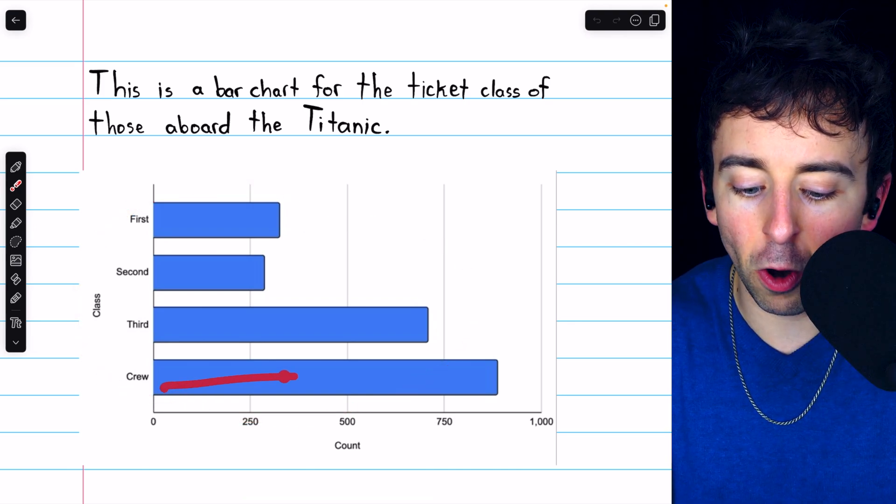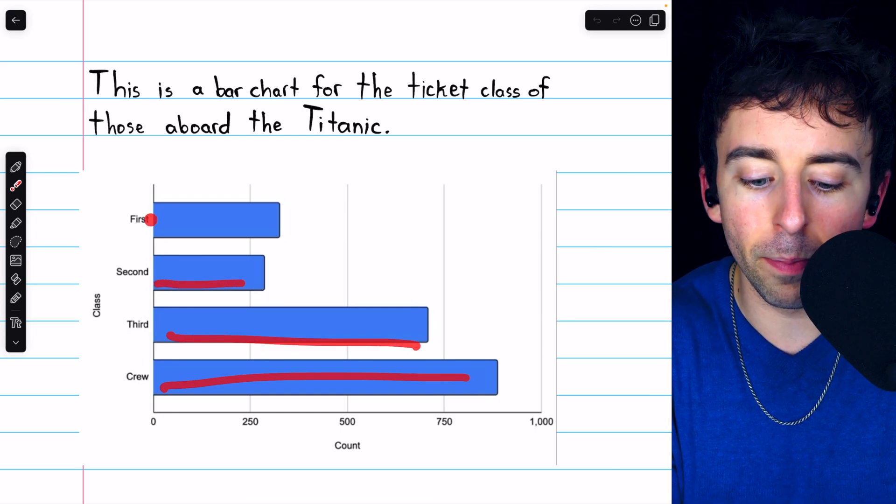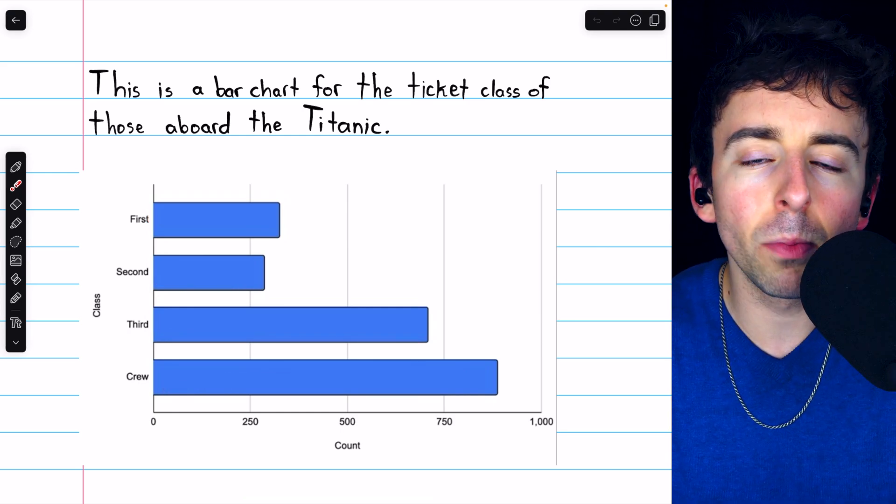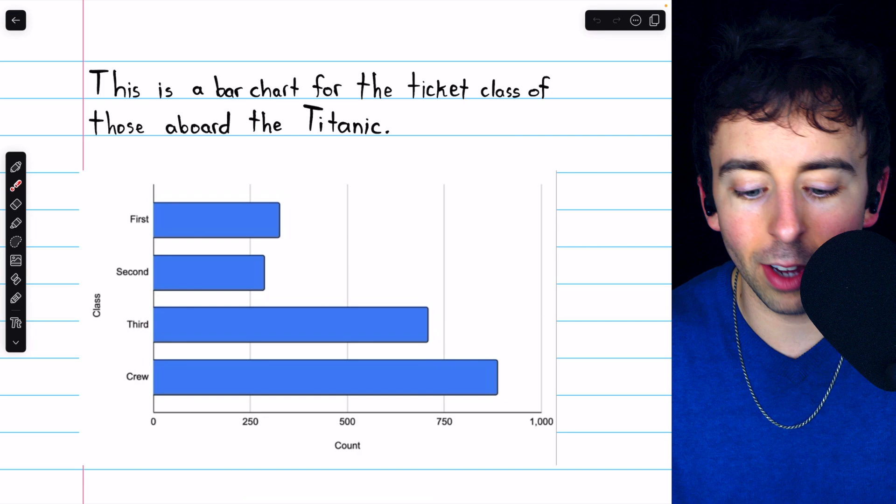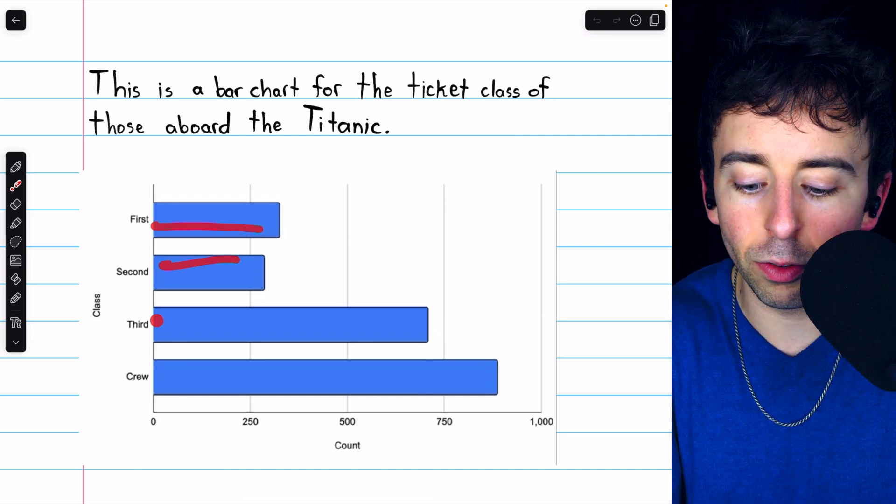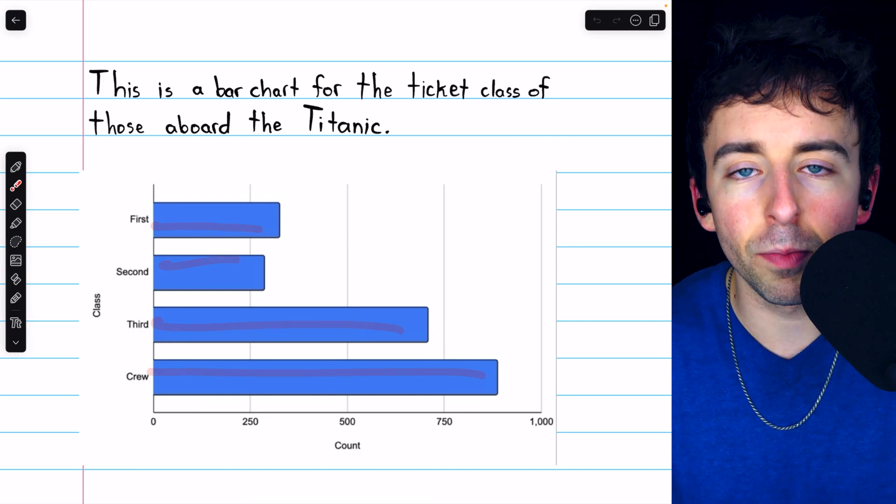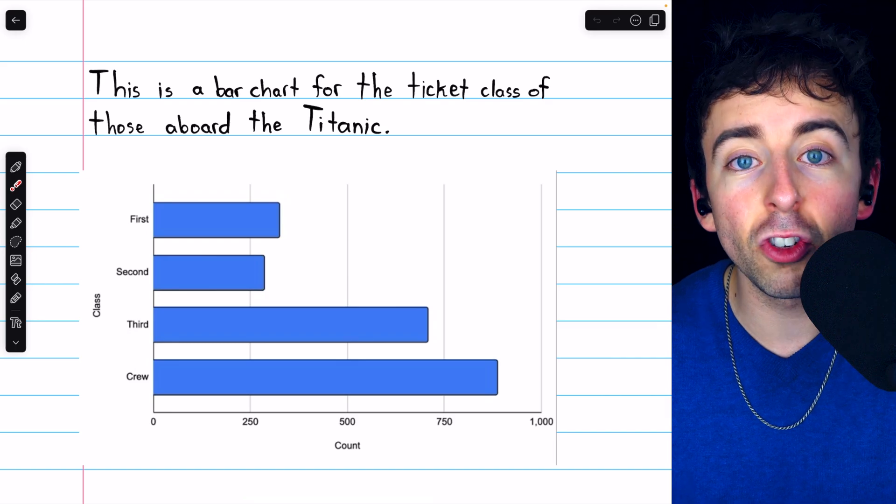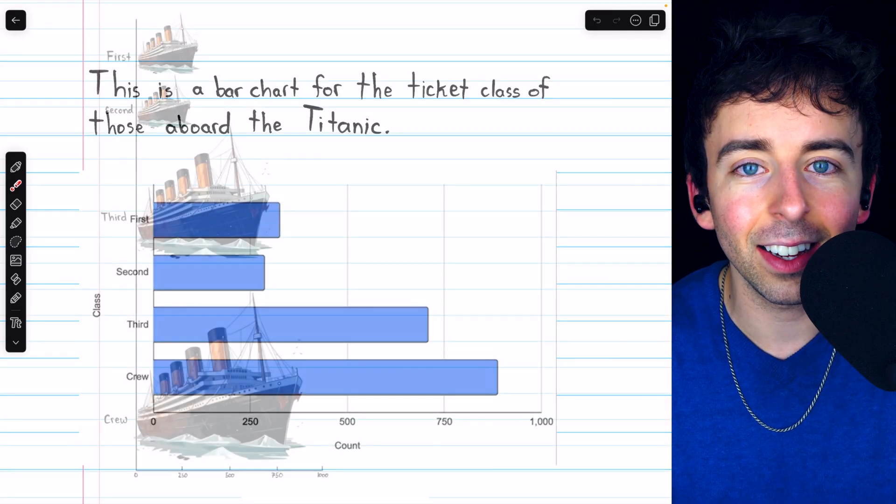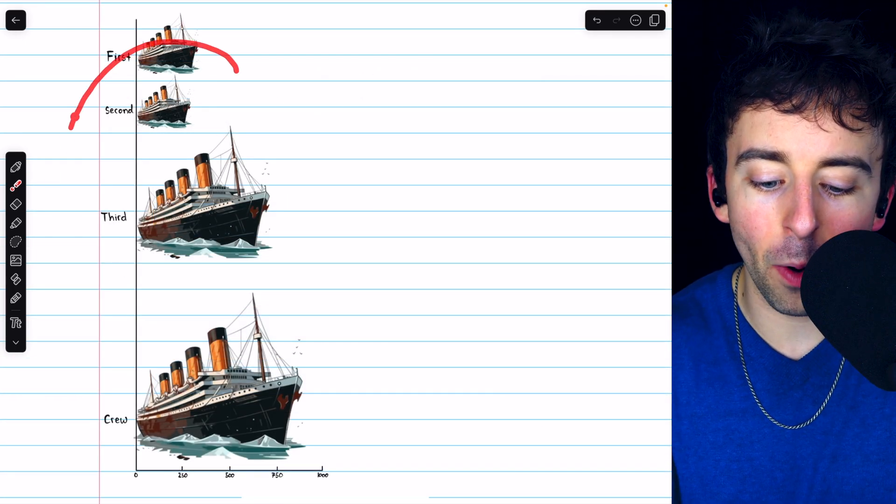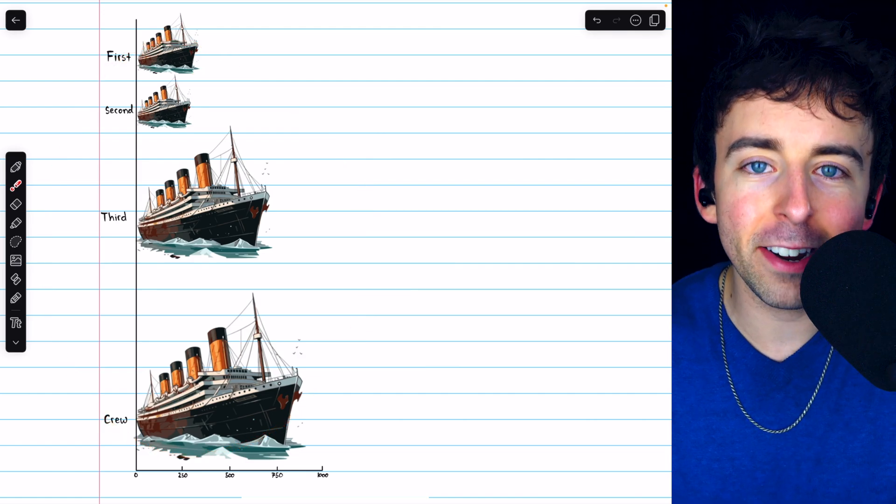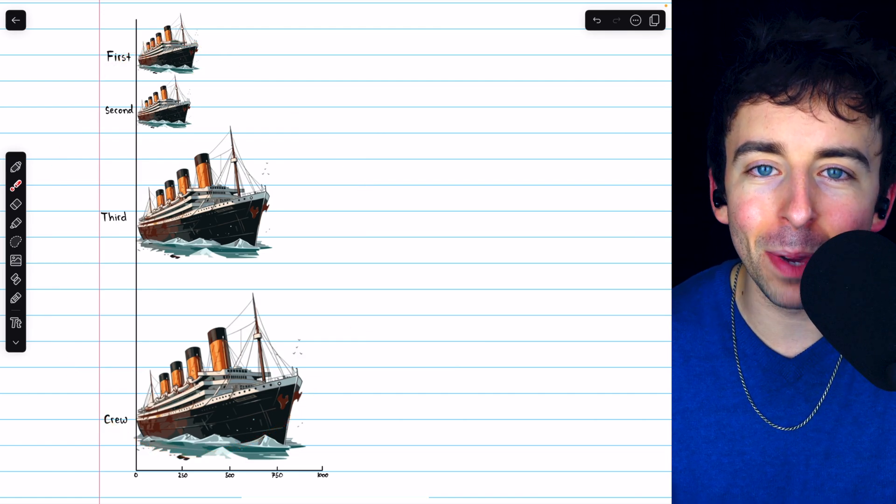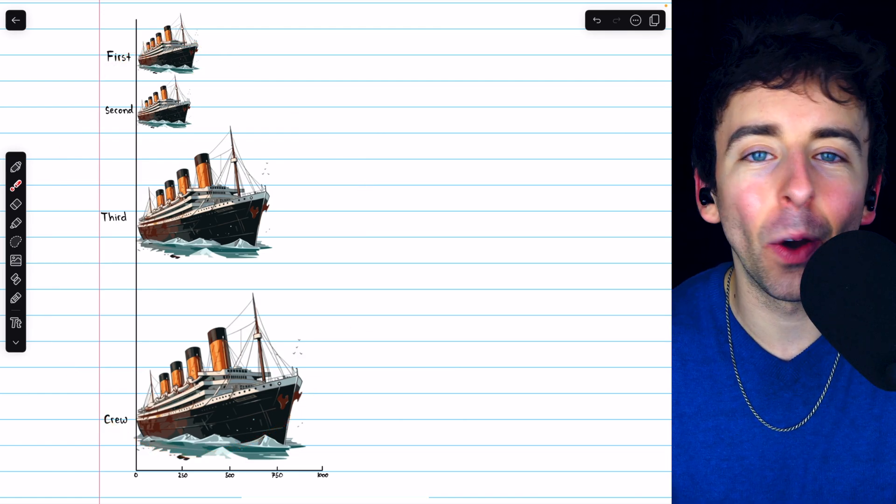Some people may look at a chart like this just consisting of bars and wish it was a little bit more visually exciting. For example, we could replace each of these bars with a thematically appropriate figure, such as a ship, since this is about the Titanic. Alright, so let's do it. Here's our brand new bar chart, where each bar has been replaced by a PNG of the Titanic.